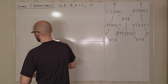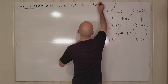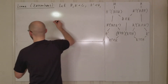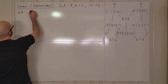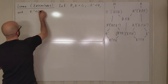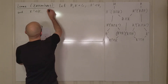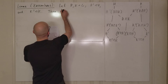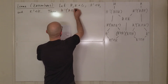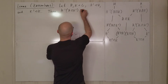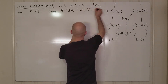h prime is going to be normal in h, and k prime is going to be normal in k. Then h prime times (h intersect k prime) is normal in h prime times (h intersect k).